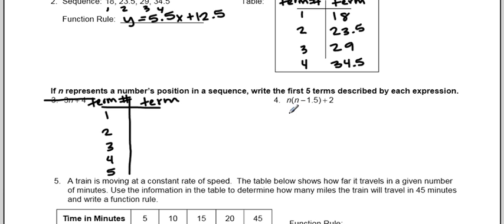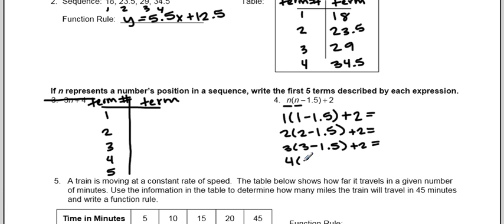So I'm just going to take this one and plug it in everywhere I see an n. So I have 1 times 1 minus 1.5 plus 2. And I'm going to continue that same pattern. 2 times 2 minus 1.5 plus 2. 3 times 3 minus 1.5 plus 2. 4 times 4 minus 1.5 plus 2. And then 5 times 5 minus 1.5 plus 2.